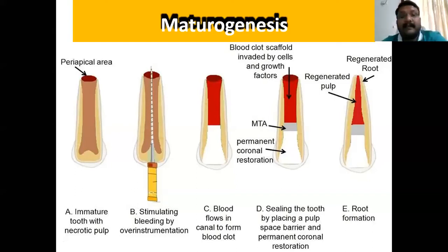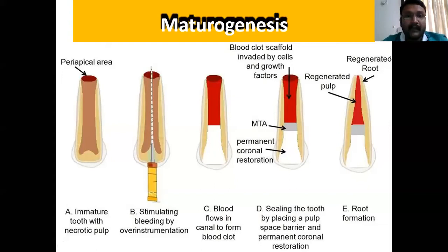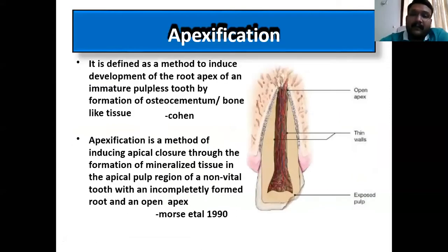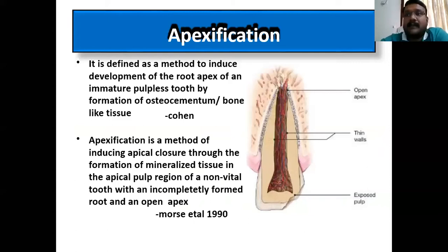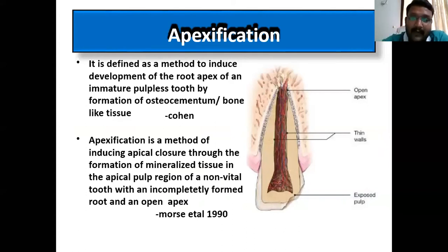Revascularization is done only in non-vital cases or chronic cases. If the pulp is irreversibly damaged and you cannot do any preservation, there is only one option to close the apex — apexification. Apexification is defined as a method to induce development of the root apex of an immature non-vital tooth through formation of osteocementum or a bone-like tissue.